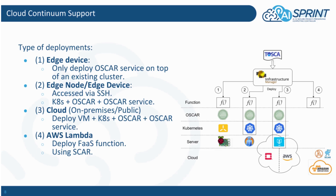An edge node or edge device that can be accessed via SSH — in this case, Kubernetes, OSCAR, and on top the OSCAR services will be deployed. The third case is the standard cloud deployment, where the Toscarizer will deploy the virtual machines and then the full stack of components of the application.